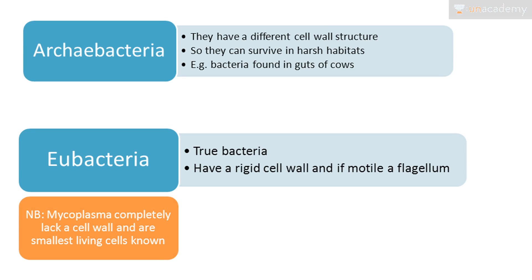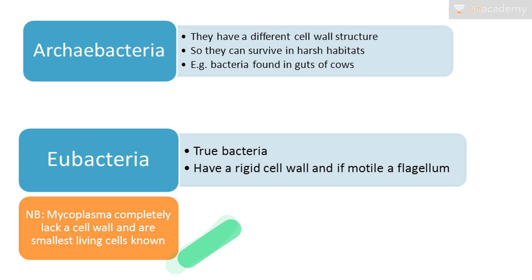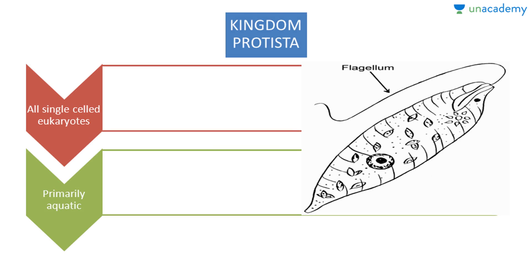Bacteria can be classified into two types: archaebacteria and eubacteria. Archaebacteria have a different cell wall structure and can survive in the harshest habitats — for example, bacteria found in the guts of cows responsible for methane production. Eubacteria, also known as true bacteria, have a rigid cell wall and, if motile, possess a flagellum. Importantly, Mycoplasma is a genus of bacteria that completely lacks a cell wall and represents the smallest living cells known — a frequently asked exam point.